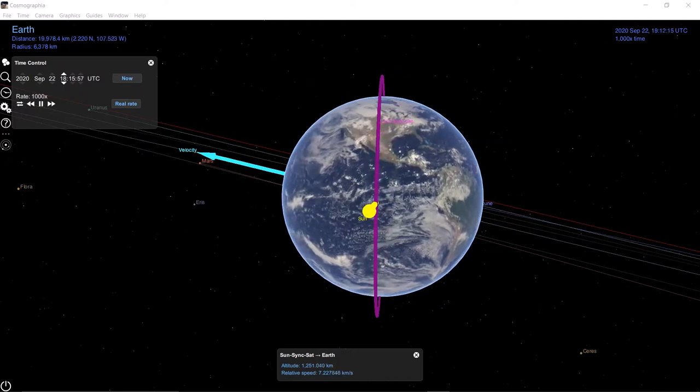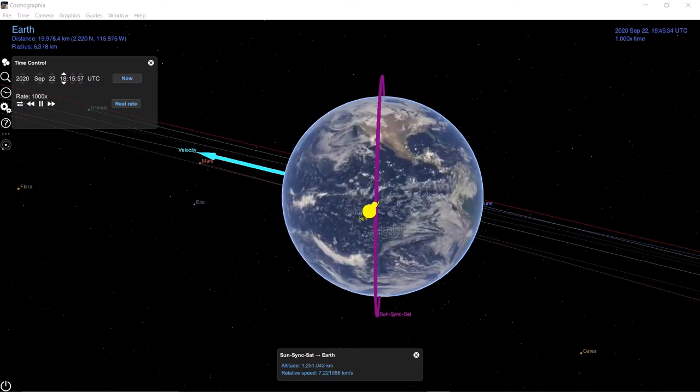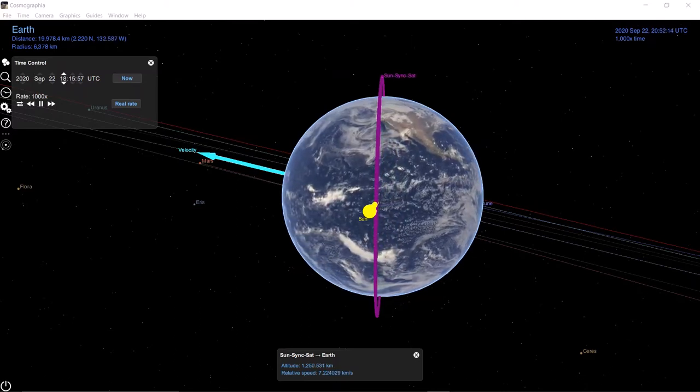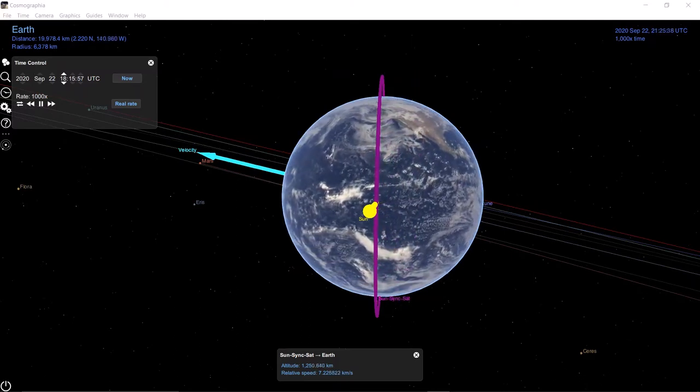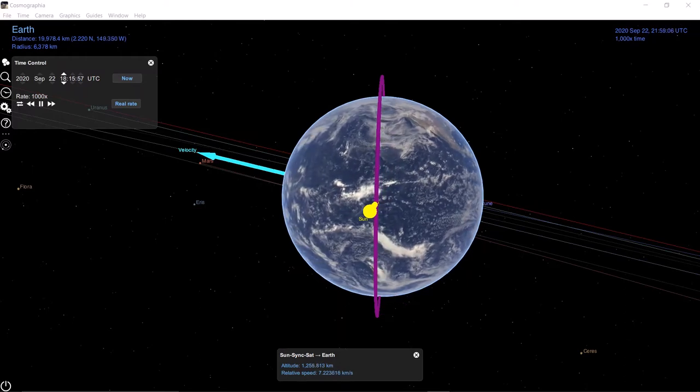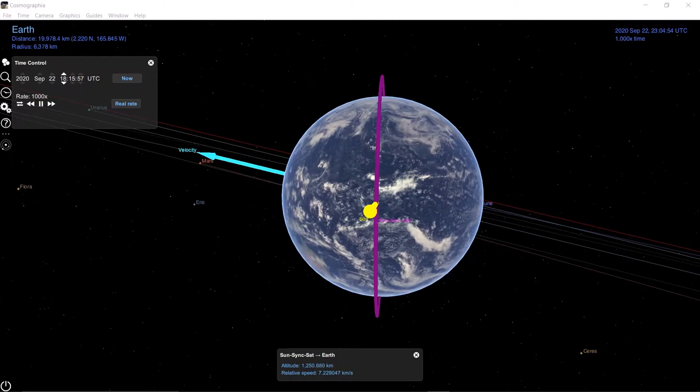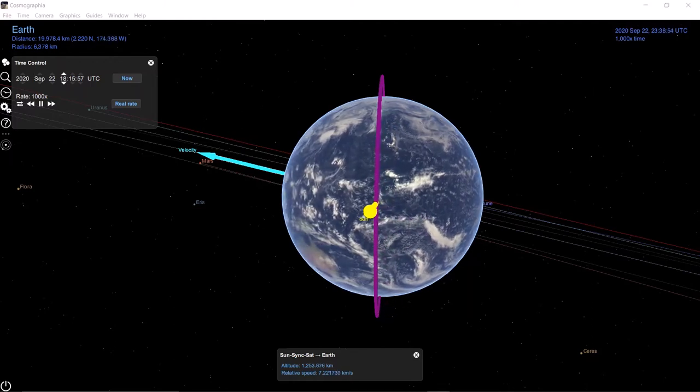The definition of a sun-synchronous orbit is a near-polar orbit whose nodal precession rate is equal to Earth's mean orbital rate around the sun. In geometric terms, this means that the orientation of the orbital plane of a sun-synchronous orbit remains constant with respect to the sun vector, as is shown in the animation here.